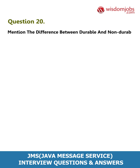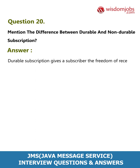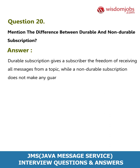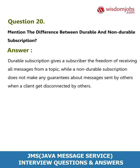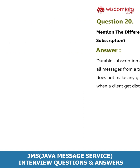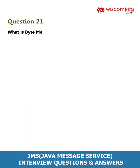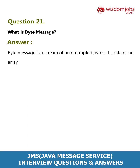A JMS session could be locally transacted, non-transacted, or distributed transacted. Question 20: Mention the difference between durable and non-durable subscription. Answer: Durable subscription gives a subscriber the freedom of receiving all messages from a topic, while a non-durable subscription does not make any guarantees about messages sent by others when a client gets disconnected.